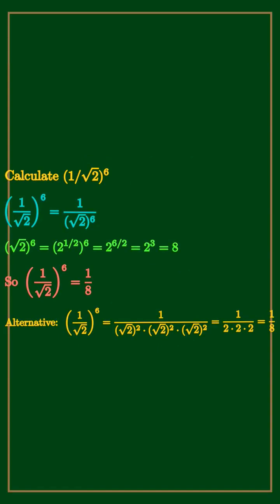Calculate 1 over square root 2 to the 6th power. Square root 2 to the 6th is 2 cubed equals 8. So the value is 1 over 8.